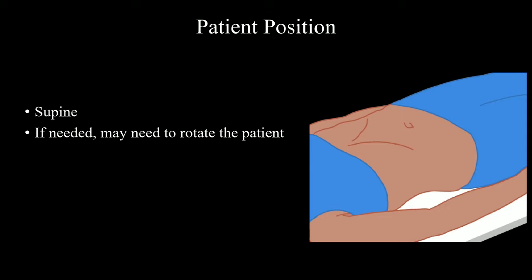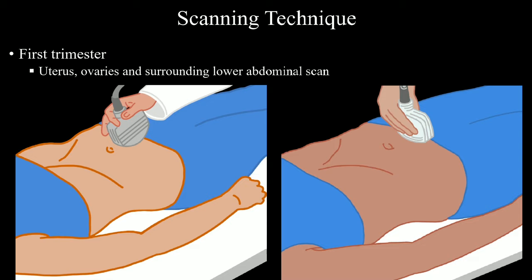Back to the transabdominal scan — the patient is examined in the supine position. You can also rotate the patient if needed for better visualization. First trimester scanning is the same as uterus-ovary scans. Put the probe over the lower abdomen below the umbilicus up to the pubic bone, both longitudinally and transversely. Start at the midline, then gradually try to go laterally. Rotate and tilt the transducer during scanning. Never press over the lower abdomen — just touch with adequate ultrasound gel. If you press, it will be difficult for her to hold the urine.